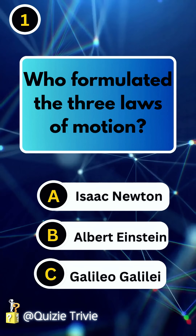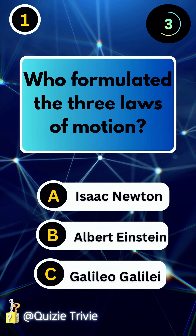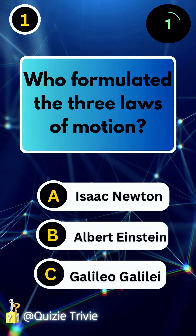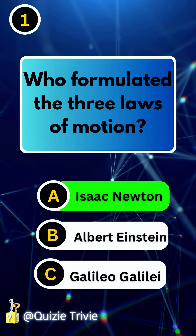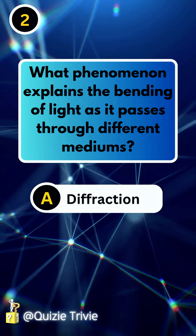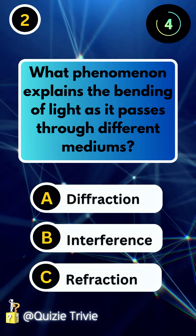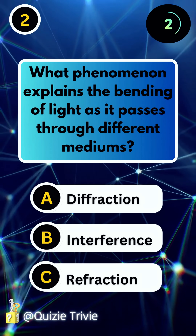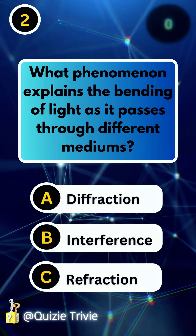Who formulated the three laws of motion? Isaac Newton. What phenomenon explains the bending of light as it passes through different mediums? Refraction.